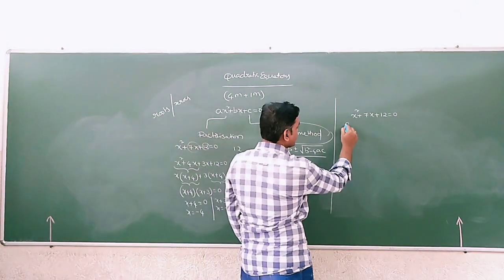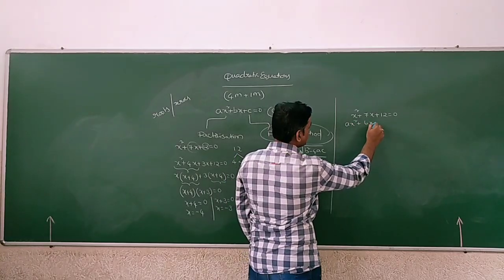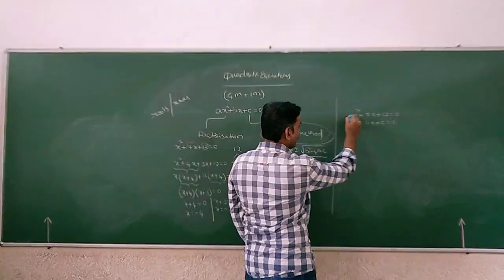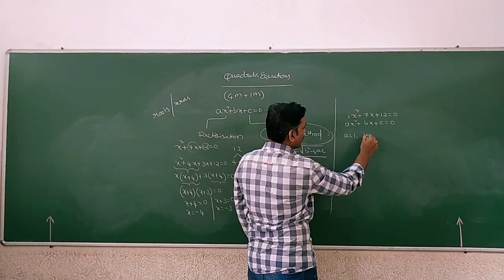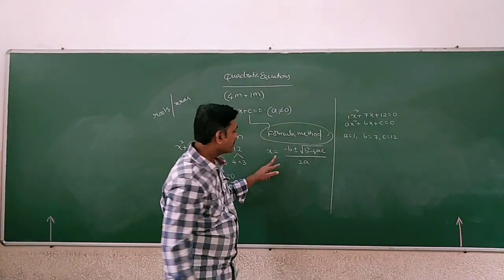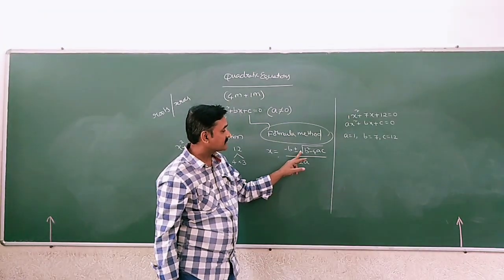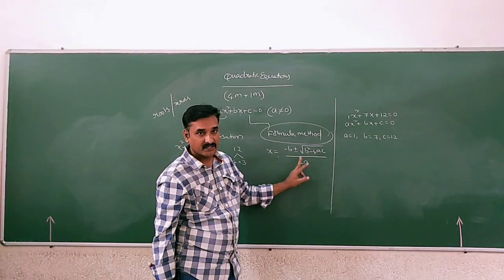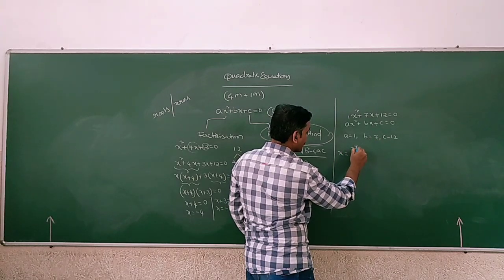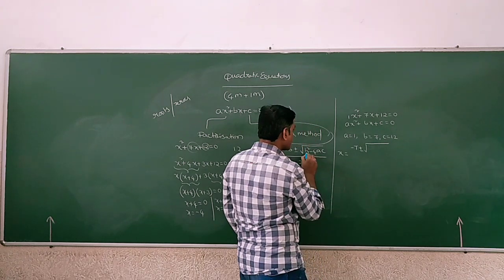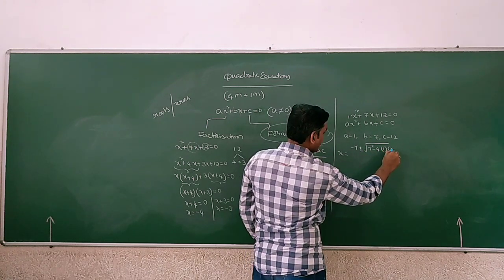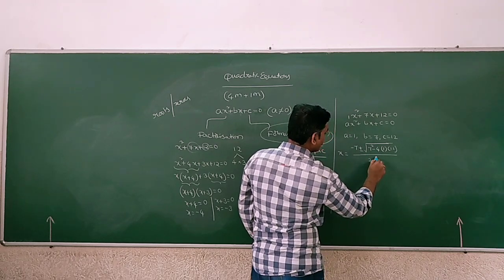Compare the terms with Ax² plus Bx plus C equals to 0. The coefficient of x² is 1, so a equals to 1, b equals to 7, and c equals to 12. The formula is x equals to minus b plus or minus root of (b² minus 4ac) divided by 2a. Substituting: x equals to minus 7 plus or minus root of (7² minus 4 into 1 into 12) divided by 2 into 1.